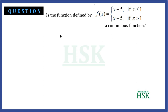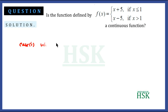We have to solve and determine whether f(x) is a continuous function or not. To solve this question, we are going to consider the continuity of the function in three cases: first when x is less than 1, second when x is greater than 1, and third when x is equal to 1.